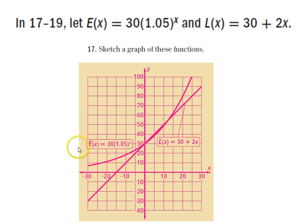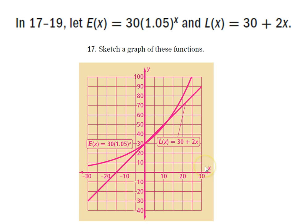We have two functions here. E of x is the curved one, and it's curved because E is an exponential function. We know that E is an exponential function because the variable in the function is an exponent. Whenever the variable is an exponent, the function is exponential. It is not going up by the same amount — that's why there's a curve. From 0 to 10, the change is not the same as from 10 to 20, 20 to 30, and so on. It's not a constant change.